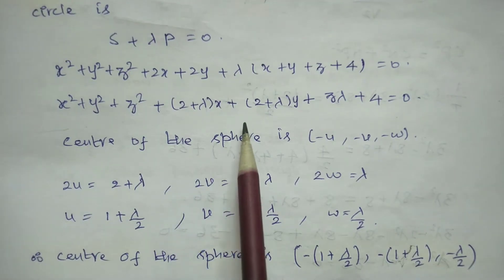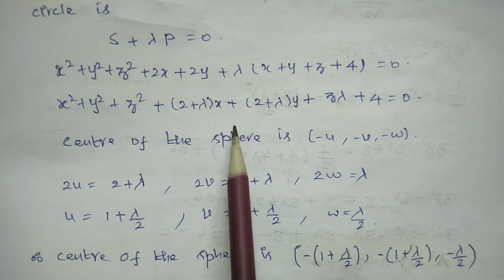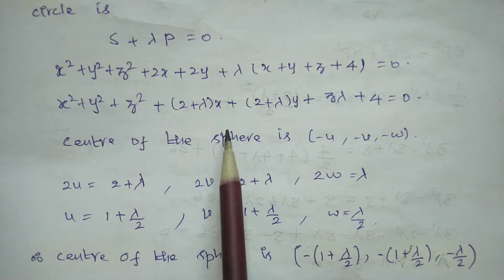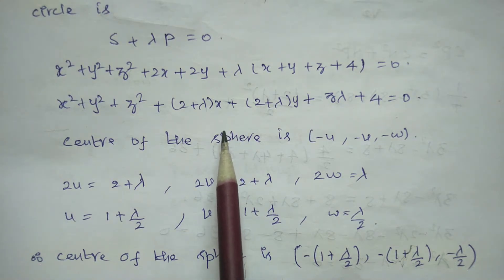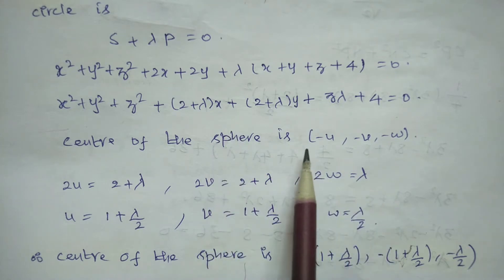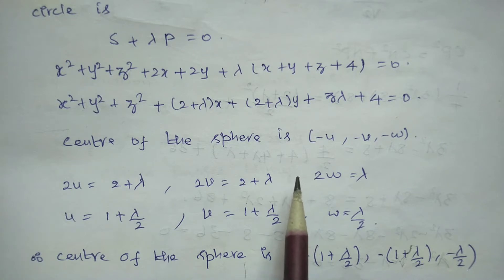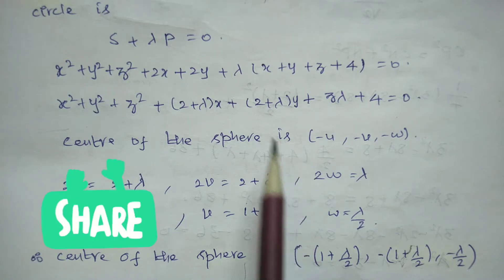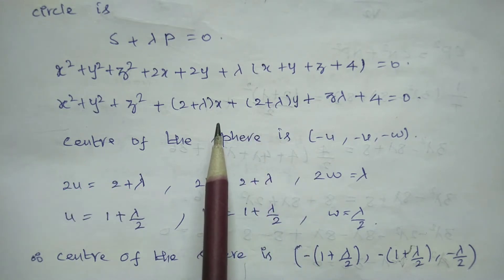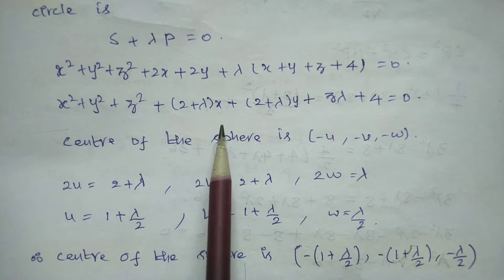We use the general equation of the sphere and compare. We will compare and find the u, v, w values, then substitute into the center formula and the radius formula. The general equation of the sphere is compared to extract u, v, w values.